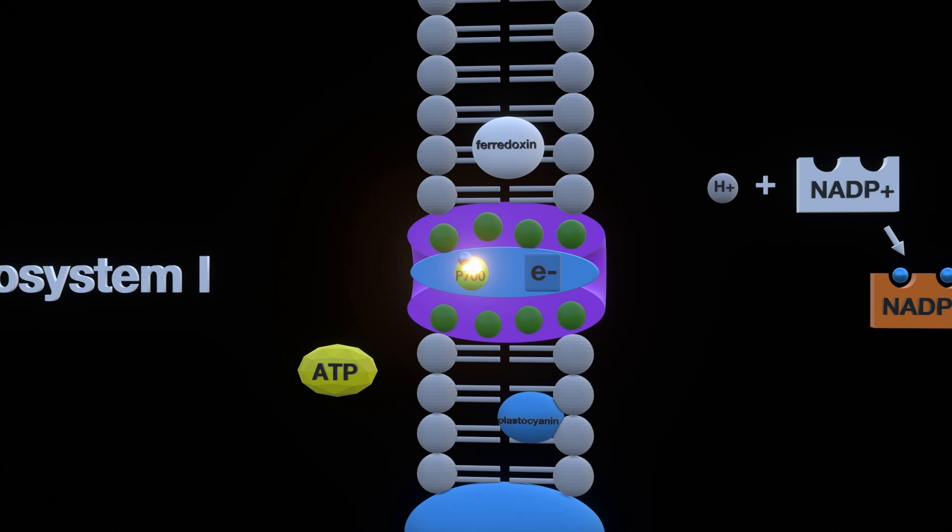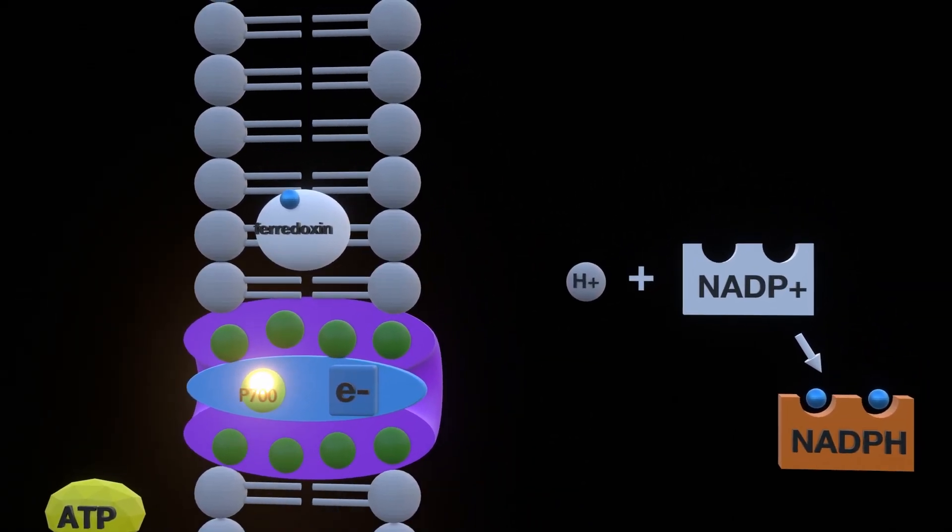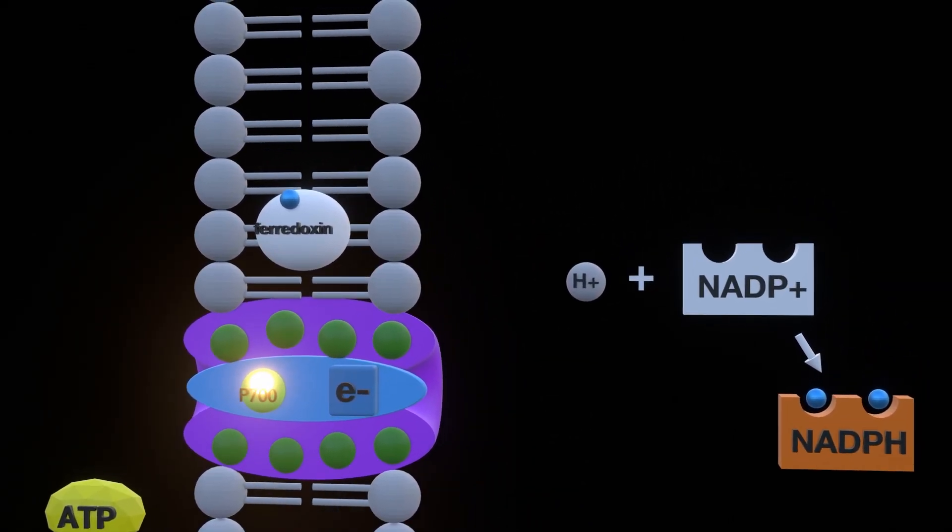Now once again the electron moves up in energy states as it is excited by the photon and moves to the electron absorber, where it then starts going down the second electron transportation chain into a protein called ferrodoxin. From there an external NAD+ reductase accompanied by a hydrogen molecule takes in the one electron, but it requires another to be complete.